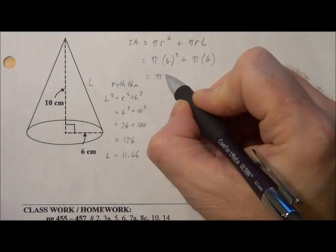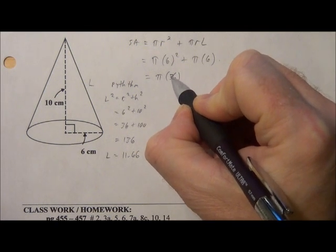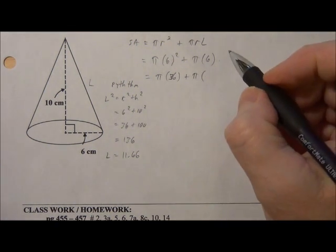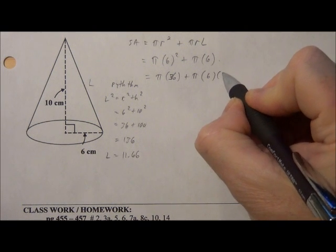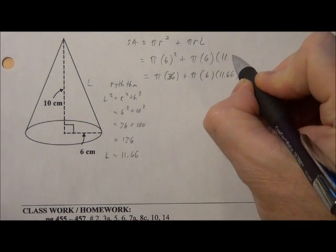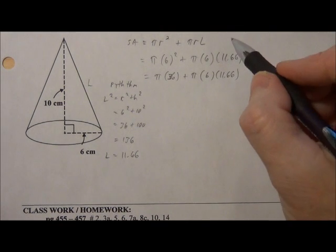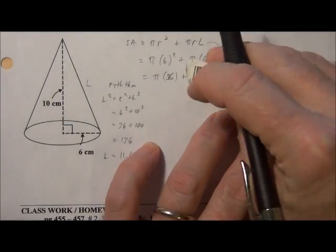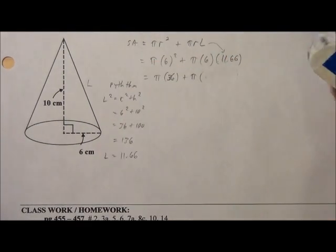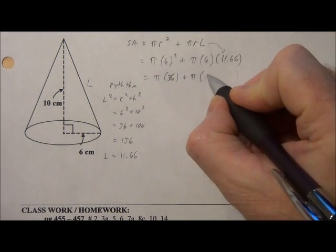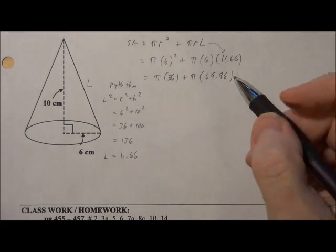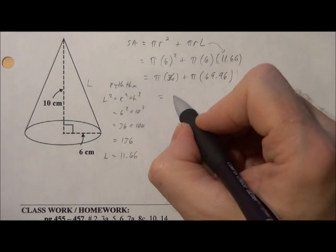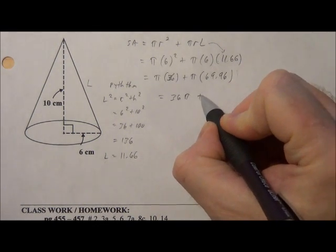So we've got pi times 36, plus pi times 6 times 11.66. That l is in there from the Pythagorean theorem calculation. I think on this line, I'll just do that multiplication. So 11.66 times 6 gives me 69.96. I think I'm going to round that to 70 just to kind of make things easy. So we've got 36 pi plus 70 pi.